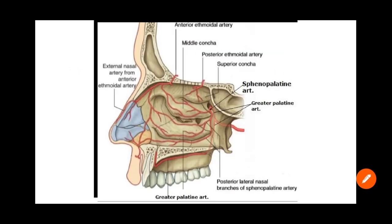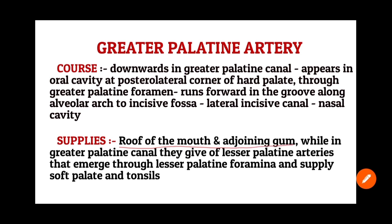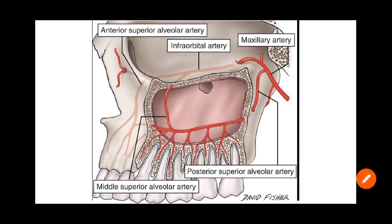G stands for greater palatine artery. It runs downwards in the greater palatine canal and appears in the oral cavity through the posterolateral corner of the hard palate via the greater palatine foramen, then runs forward along the alveolar arch to the incisive fossa, where it enters the lateral incisive canal to enter the nasal cavity. It supplies the roof of the mouth and adjoining gum, and gives rise to lesser palatine arteries that emerge through the lesser palatine foramen to supply the palatine tonsils.